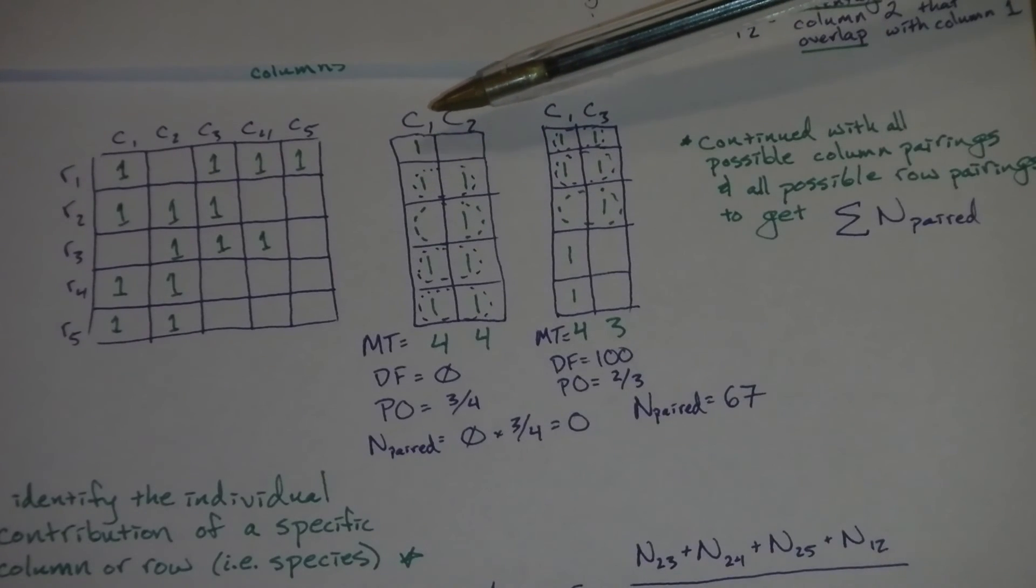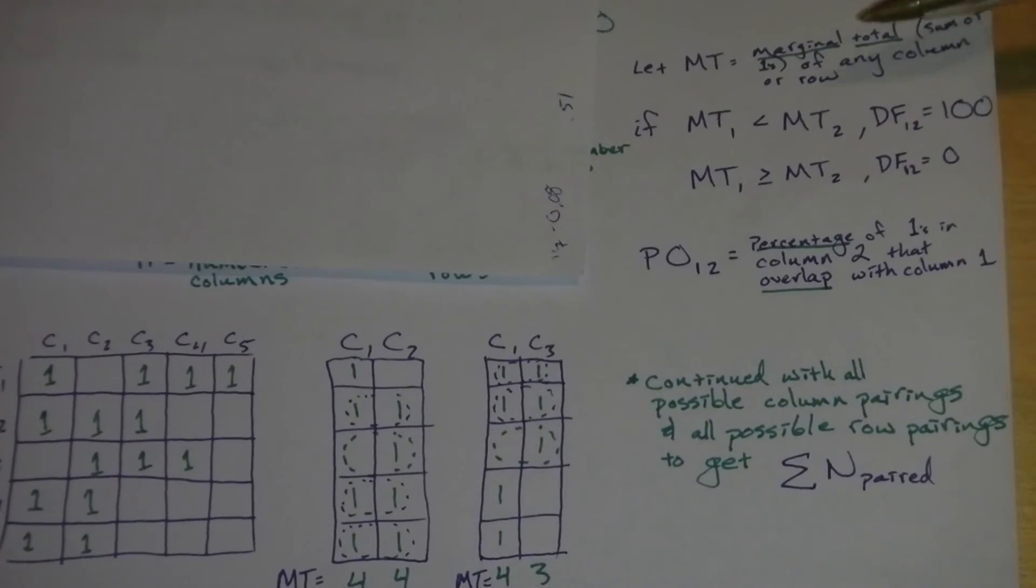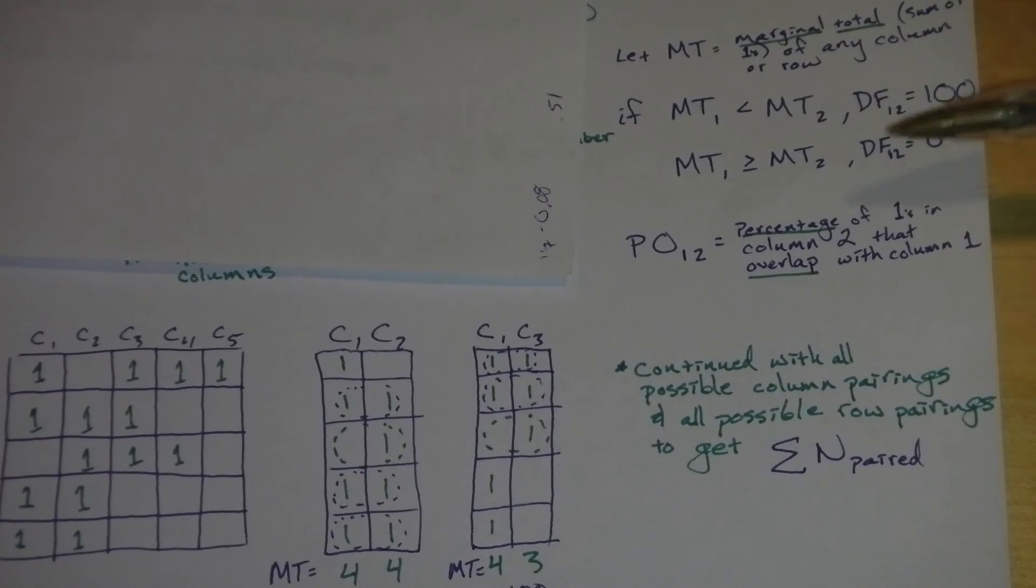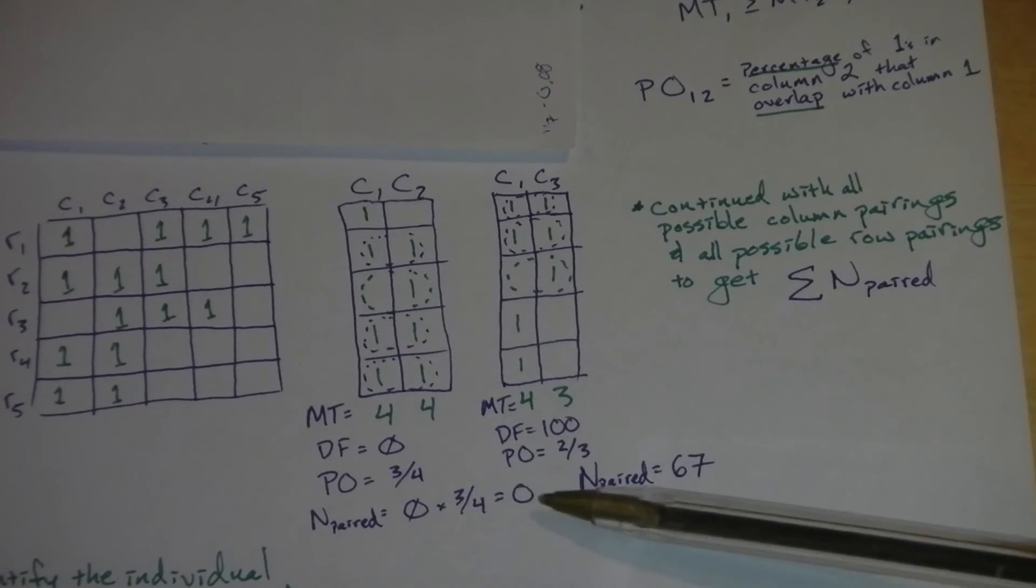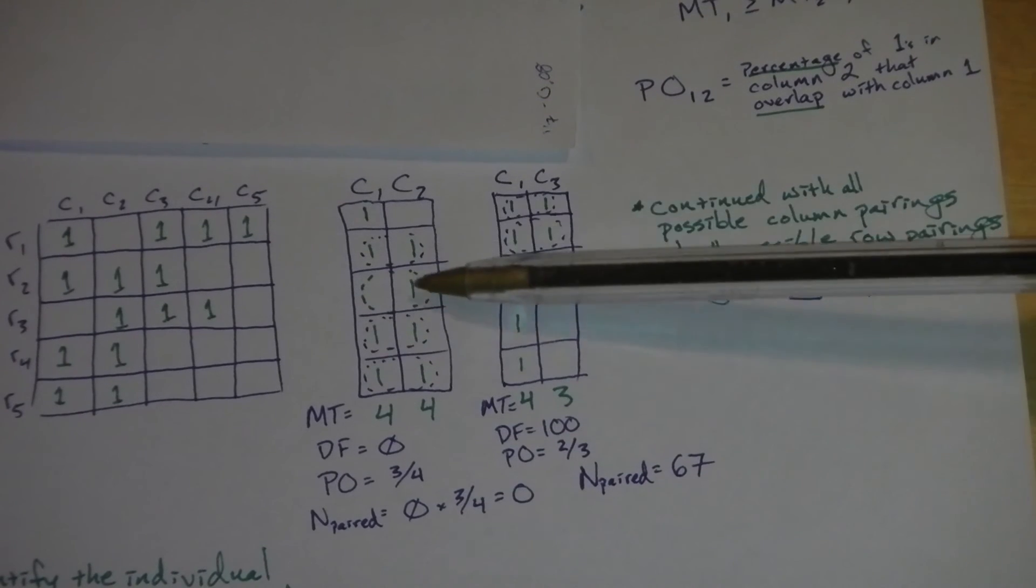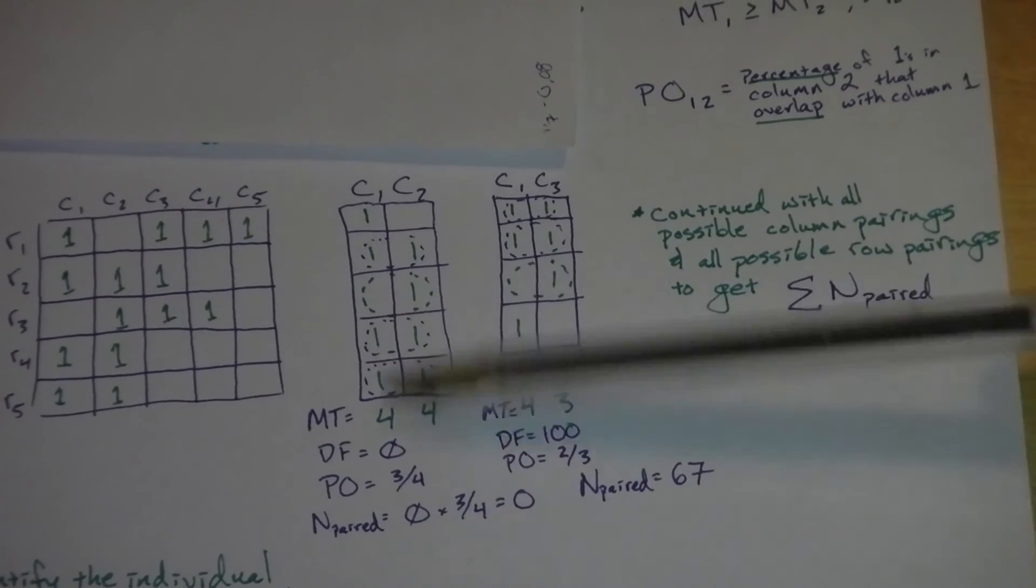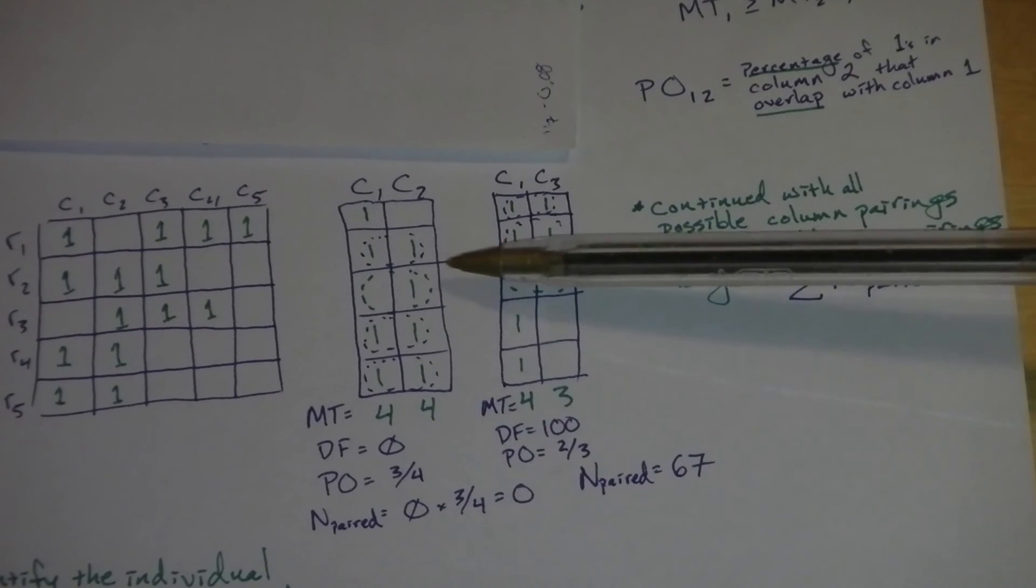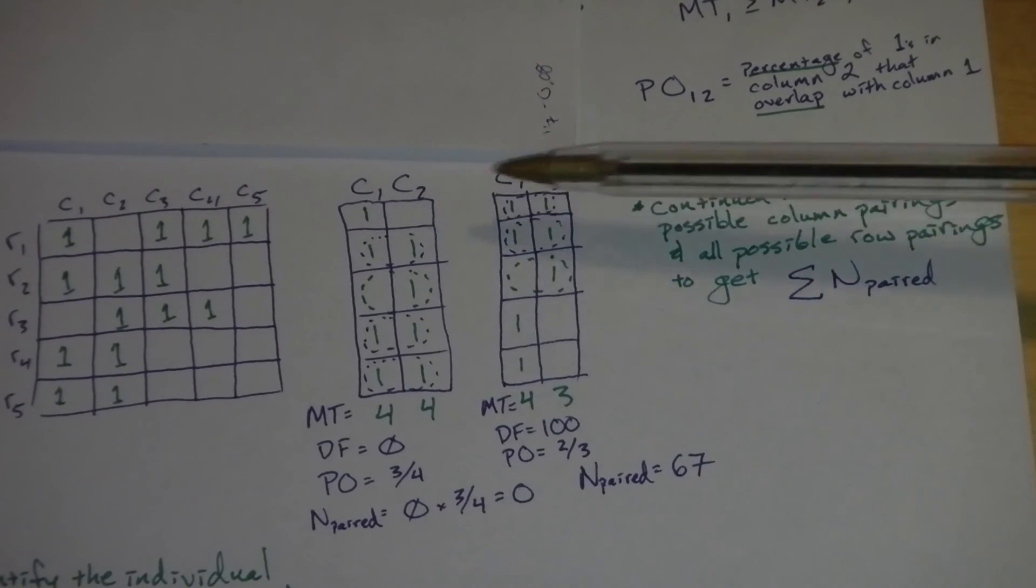So if we look at the marginal totals for column one and column two, we have a value of four. So going back up here for our decreasing fill requirement, we see that marginal total greater than or equal to the second column marginal total gives a DF of zero. So automatically our N paired value for this comparison is going to be zero, even though we have a percentage overlap of three interactions here that overlap with four possible total interactions. So that's how you end up calculating the percentage overlap, but it's not relevant in this case because there's no decreasing fill. There's essentially the marginal totals for both these values are equal.